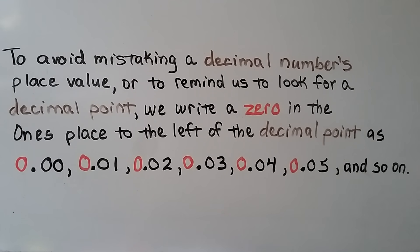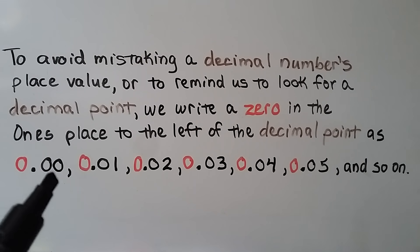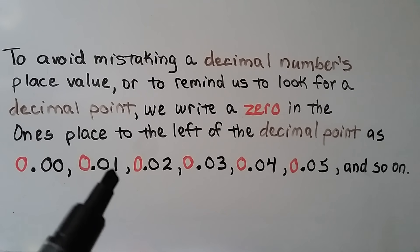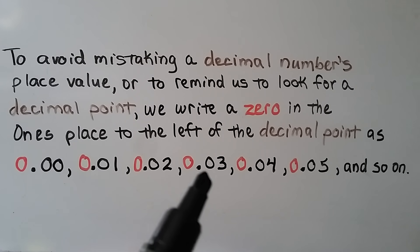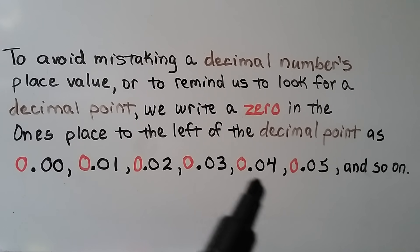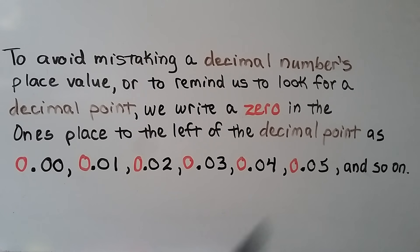To avoid mistaking a decimal's place value or to remind us to look for a decimal point, we write a 0 in the ones place to the left of the decimal point: 0 and 0 hundredths, 0 and 1 hundredth, 0 and 2 hundredths, 0 and 3 hundredths, 0 and 4 hundredths, 0 and 5 hundredths, and so on.